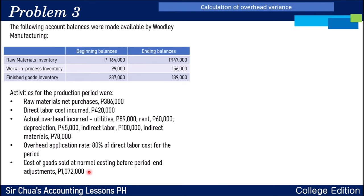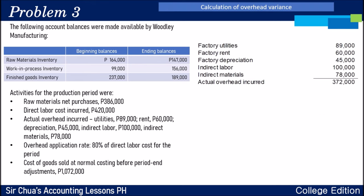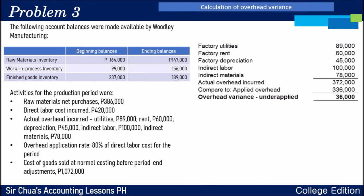Question number two: calculate the overhead variance. Actual overhead: utilities $89,000, factory rent $60,000, depreciation $45,000, indirect labor $100,000, indirect materials $78,000 — total actual overhead is $372,000. Compare to applied overhead of $336,000. The overhead variance is $36,000. Since actual overhead of $372,000 is greater than applied overhead of $336,000, the applied amount fell short — that is an under-applied variance.